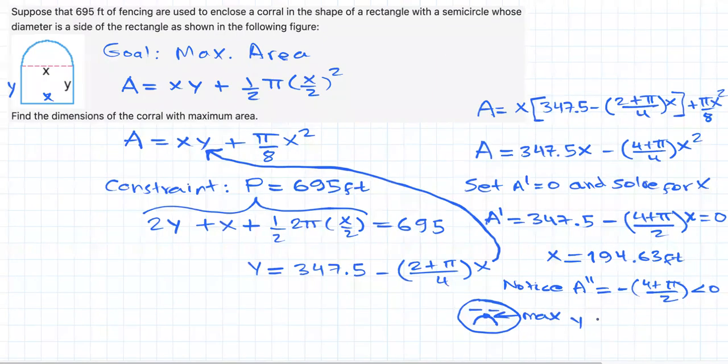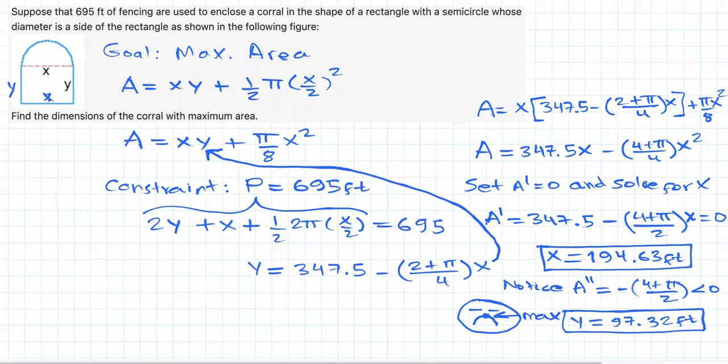Then, we can compute easily y by substituting x into here and get that y is equal to 97.32 feet. Rounding to two decimal places. And as a conclusion, we can say that x equals 194.63 feet and y equals 97.32 feet are the dimensions of the corral that has maximum area.